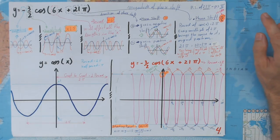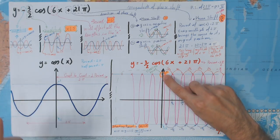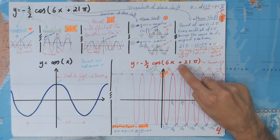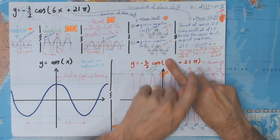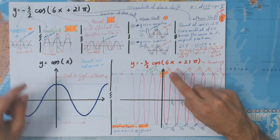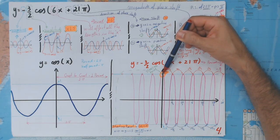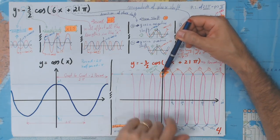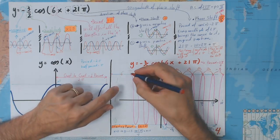Now, what do you need to plot? You just need the starting point. Our starting point: make x equals zero — minus half times cosine of pi. Cosine of pi is minus one, so with this minus it becomes positive 1.5. So our starting point is going to be exactly (0, 1.5). Once we have this, we know that this point is going to be a crest.